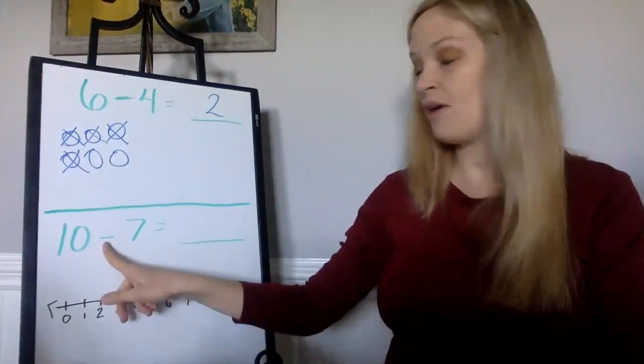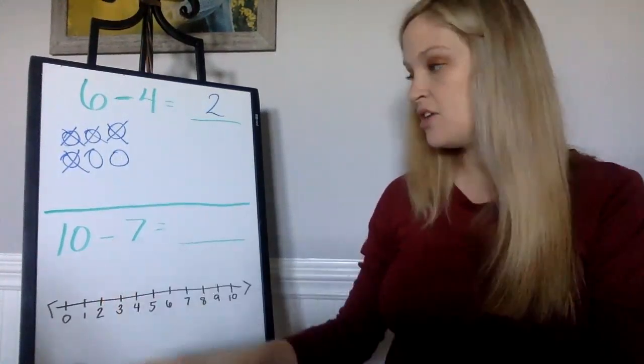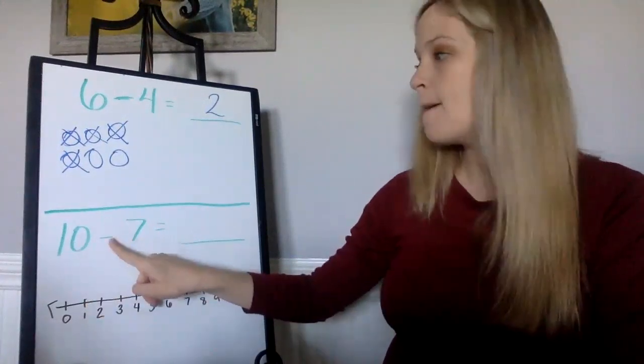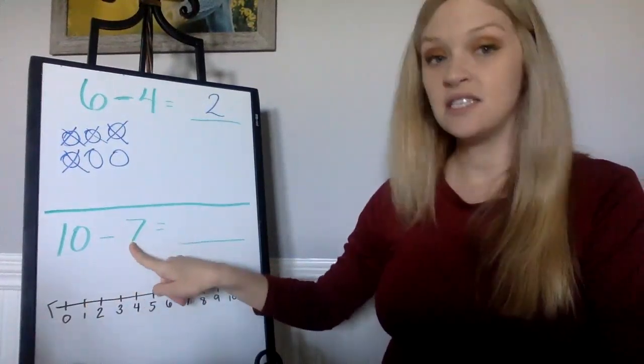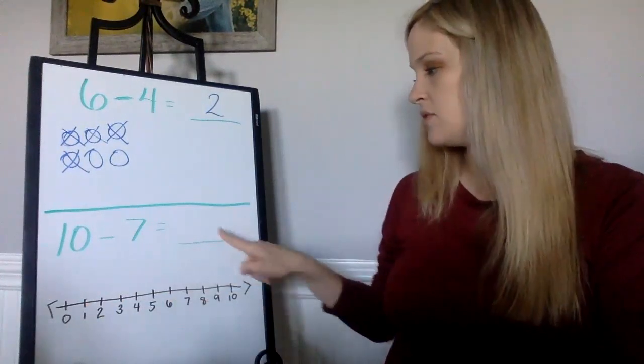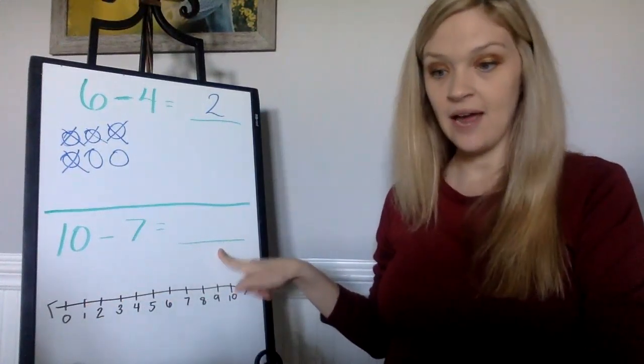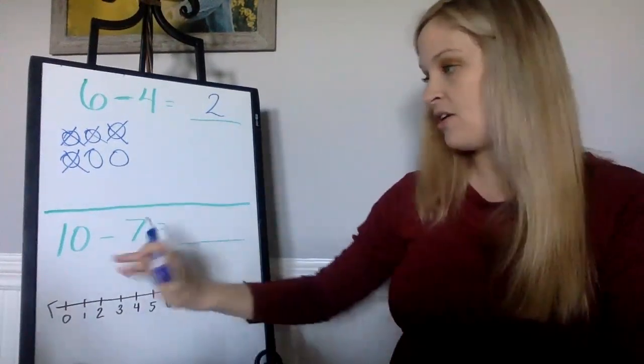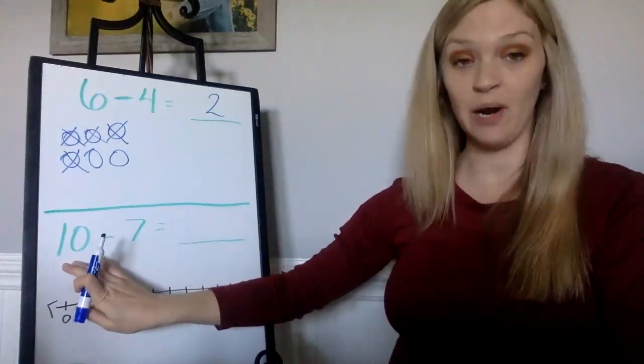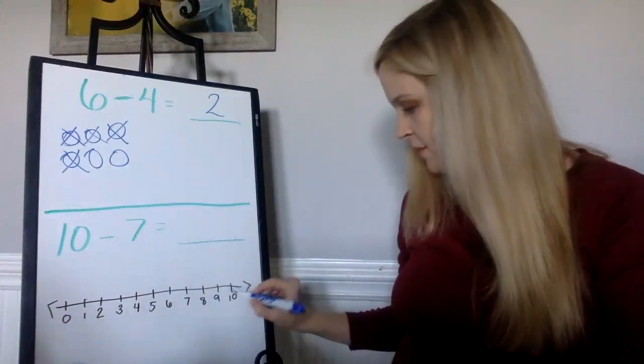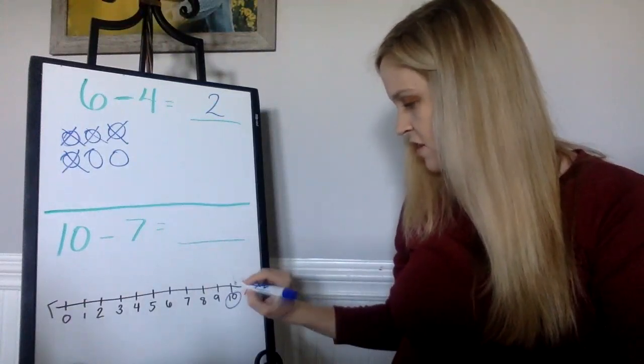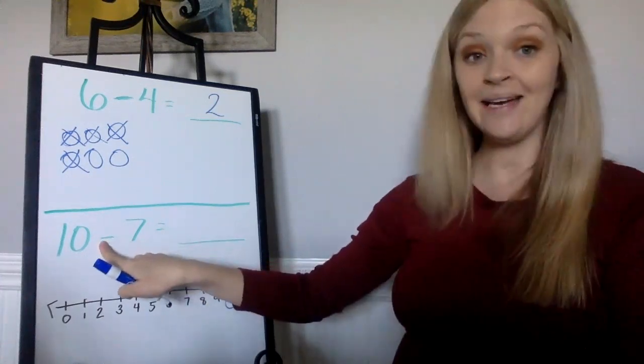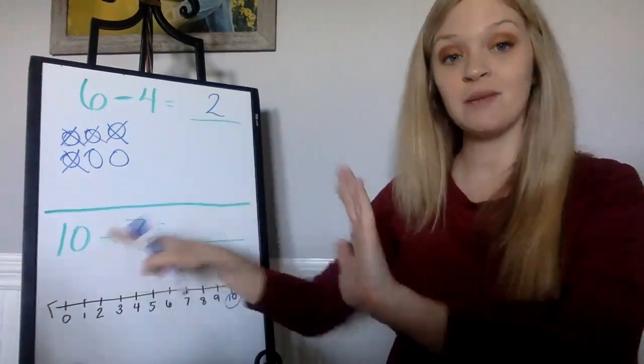Let's read our equation: 10 minus 7 equals what? I know that I start at 10 because that's my bigger number, so I'm going to come and I'm going to circle it. This is where I'm going to start. I'm going to put my dot. Minus, so I'm going backwards. I'm going to be taking away. How many? Seven.